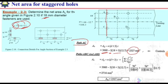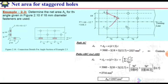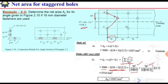For path ABC or ABD, the gross area remains the same, but now there are three holes in the critical section. So we subtract three times (18 + 3) times 12.7. We then add the stagger correction terms s²/4g: for segment AB, stagger is 76 and gauge is 64, giving 76² / (4 × 64); and for segment BC, stagger is 76 and gauge is 108.3, giving 76² / (4 × 108.3). All multiplied by the thickness.